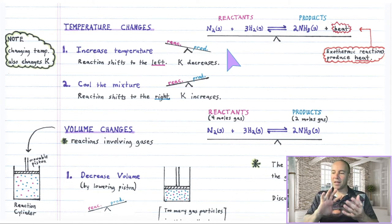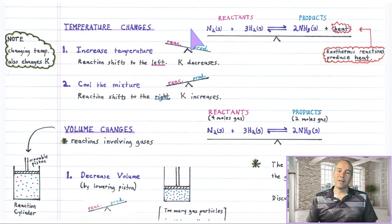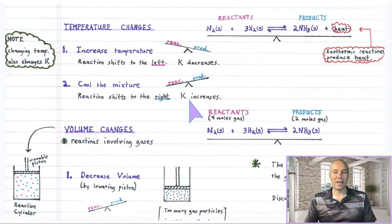For endothermic reactions, everything's opposite. Heat is absorbed in an endothermic reaction, and you could write it on the reactant side. If you increase the temperature, the reaction shifts to the right and K would increase. And if you cool the temperature, the reaction shifts to the left and K would decrease. So everything would be opposite in that case.